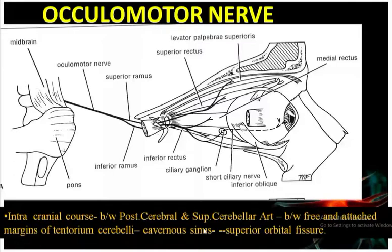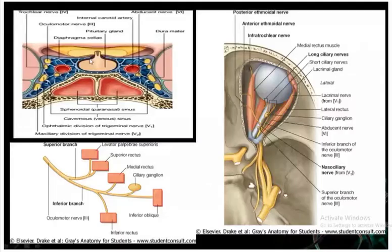Then it will pass through the lateral wall of the cavernous sinus. You can see this is the pituitary gland; on the side we have the cavernous sinus. The cranial nerves in the lateral wall are the oculomotor, trochlear, ophthalmic V1, and V2. The contents of the cavernous sinus are the internal carotid artery and the abducens nerve.